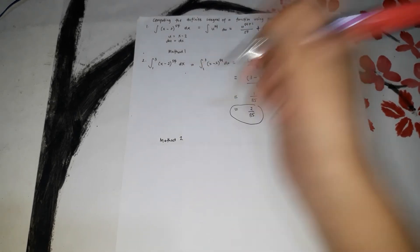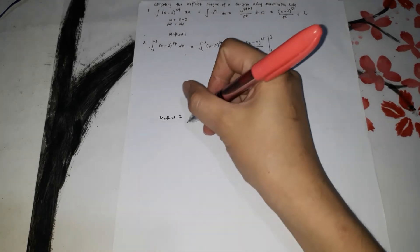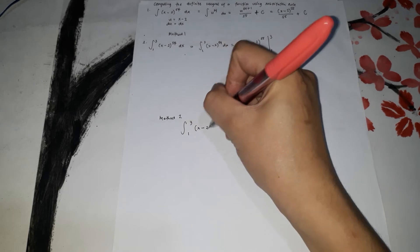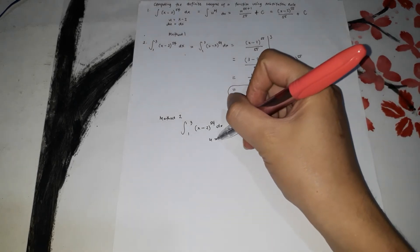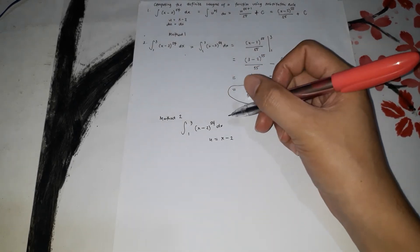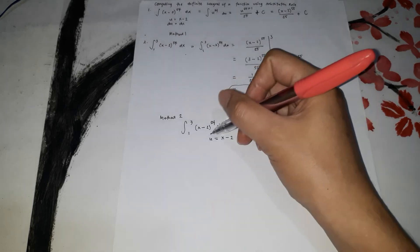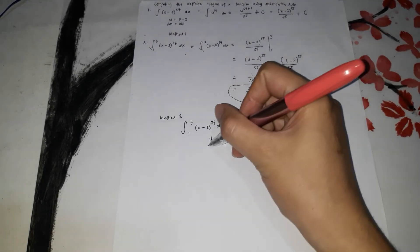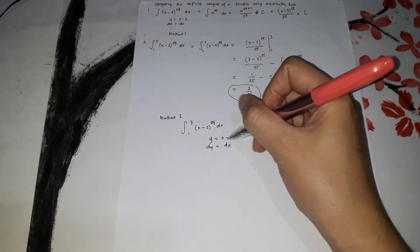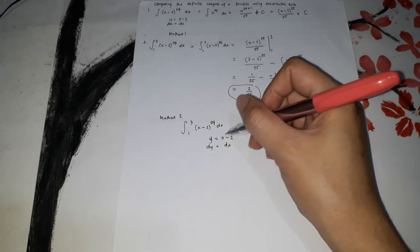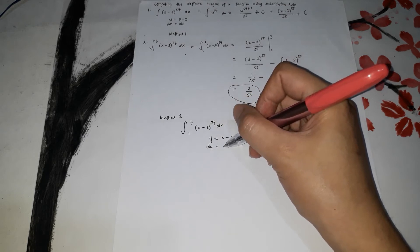That's Method 1. For Method 2, we use substitution and change the limits. Let u equal x minus 2 — or you could use y. We find dy = dx, since the derivative of (y = x minus 2) gives dy = 1 dx.